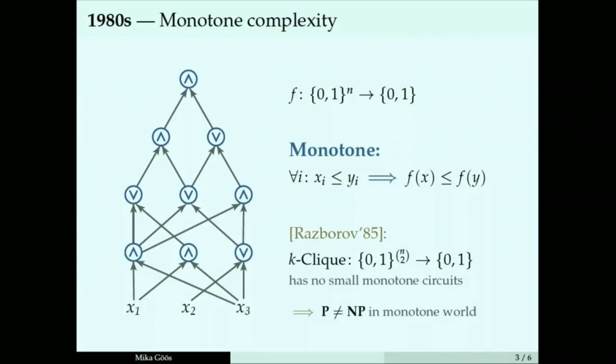A big breakthrough in the 80s was when Razborov showed a lower bound on the monotone circuit complexity of the k-clique function. K-clique is a monotone function. It takes as input a graph on N vertices. The input describes a graph and you output yes if the graph contains a k-clique. A subset of k-nodes where all the pairwise edges are present. It's one of these canonical NP-complete functions. And Razborov showed monotone circuits can't do it. You can even interpret this as a separation of P and NP in the monotone world.